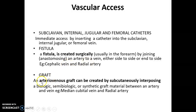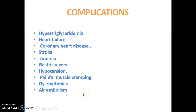The third vascular access method is a graft. An arteriovenous graft is created by subcutaneously interposing a biologic, semi-biologic, or synthetic graft material between an artery and vein. For example, medial cubital vein and radial artery. Blood is taken from the radial artery, and after dialysis, re-infused into the cubital vein.